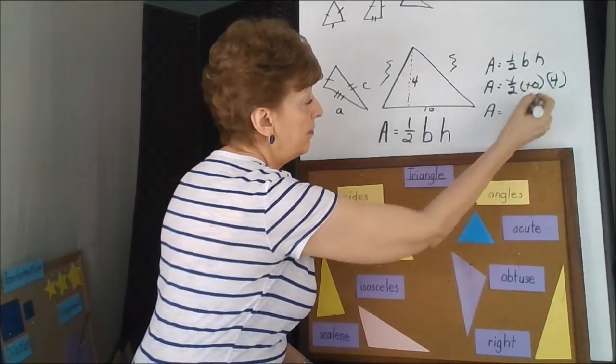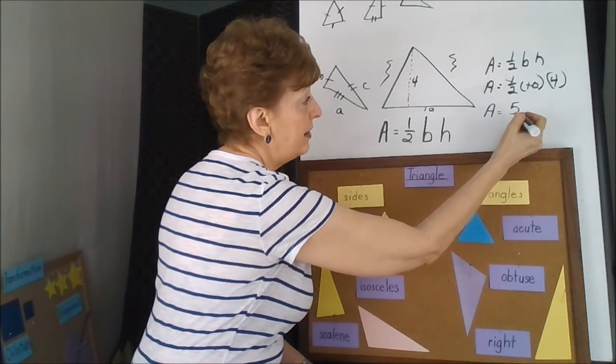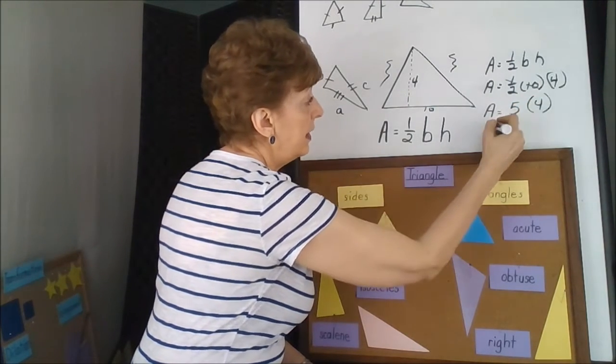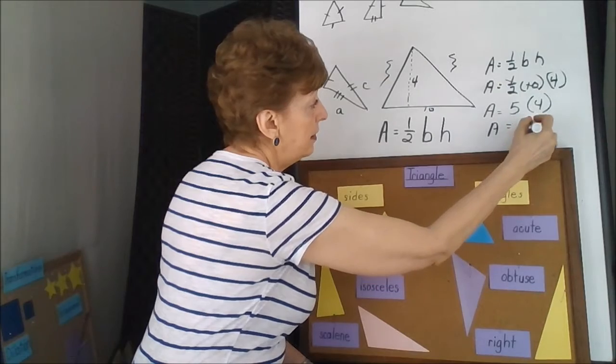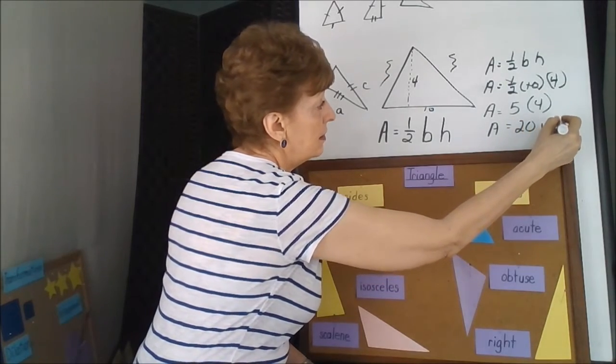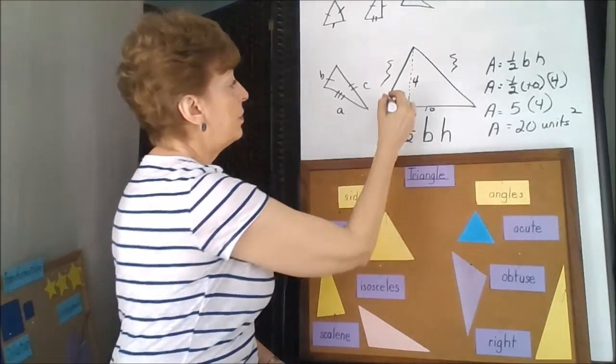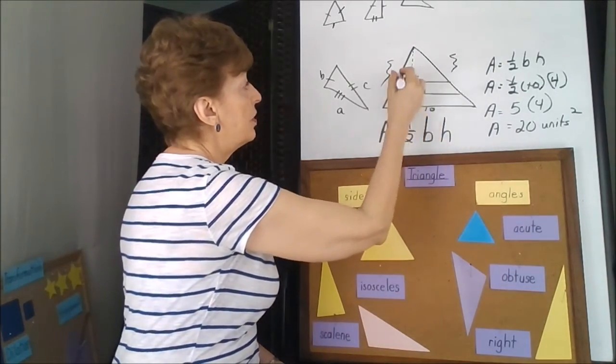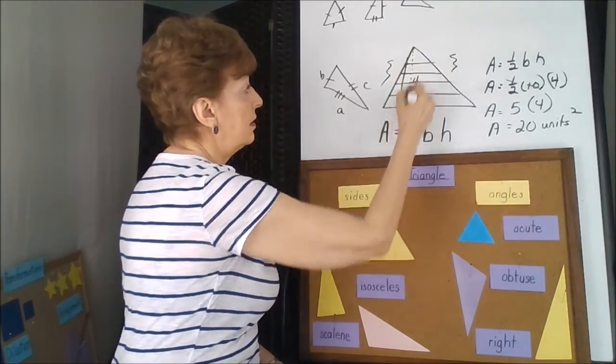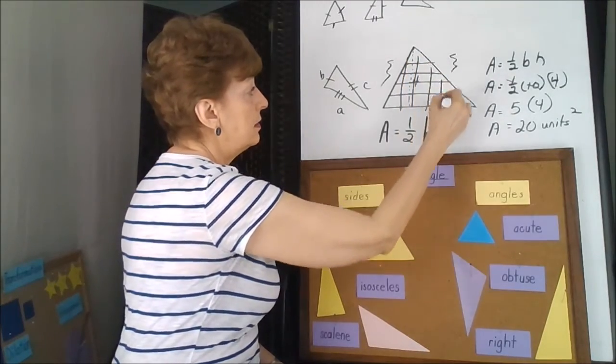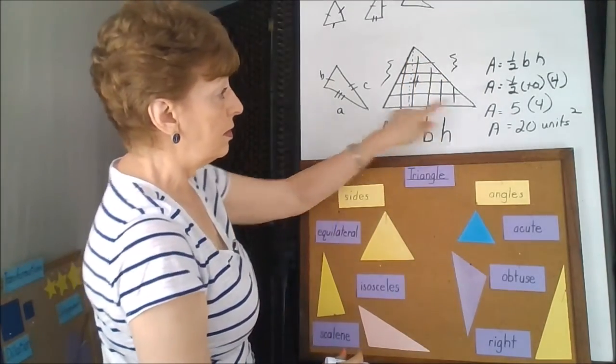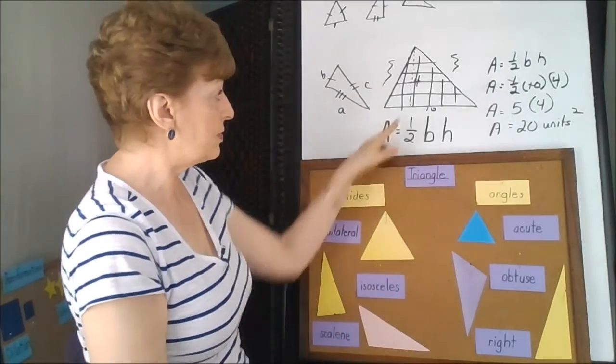Area is equal to 5, half of 10 is 5, times 4. Area is equal to 20 units squared. Because what we're doing is we're making rows and rows here, and we're making boxes. So that's why we say squared, because we're making little squares.